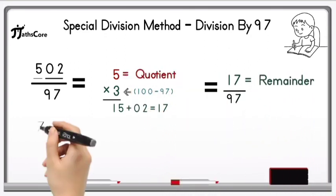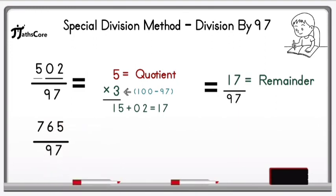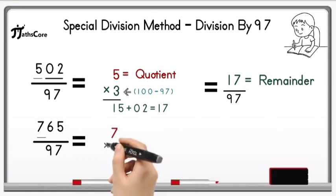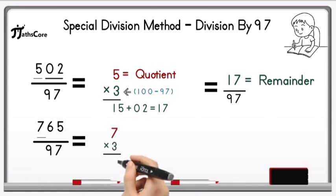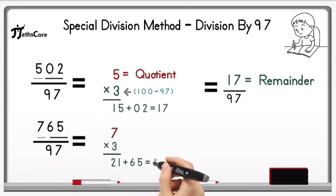Second example is 765 divided by 97. Here also we write down the hundreds plus digit 7 and multiply it with 3, because 97 is 3 less than 100. So 7 multiply by 3 equals 21, and add this 65 in it. 21 plus 65 equals 86.